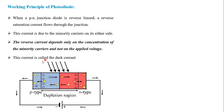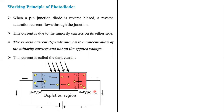This is before the light is incident, which is why we call it dark current — it means light is not incident. Even so, we observe a reverse current flowing, and that current is called dark current.